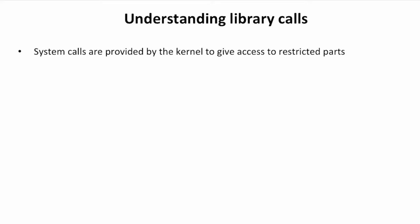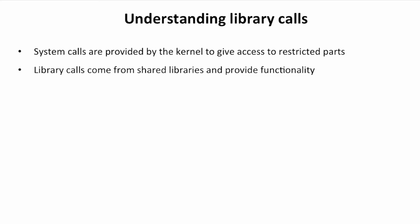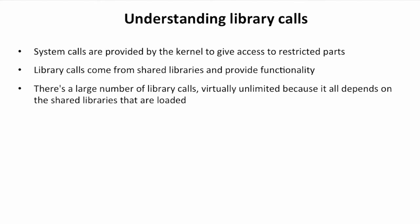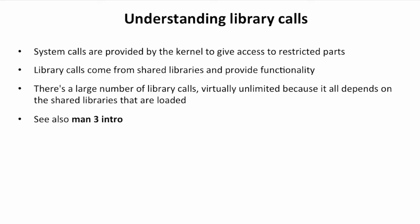We have just seen how a system call provides an interface to the kernel, which is basically opening a door between user space and kernel space. Another important part of your operating system functioning is library calls. The system calls are provided by the kernel to give access to restricted parts, while library calls come from shared libraries and provide specific functionality. There is a large number of library calls - virtually unlimited - because it all depends on the shared libraries that are loaded. If you want a nice introduction to library calls, there is a MAN page about it: man 3 intro, because section 3 of the MAN pages is entirely dedicated to library calls.